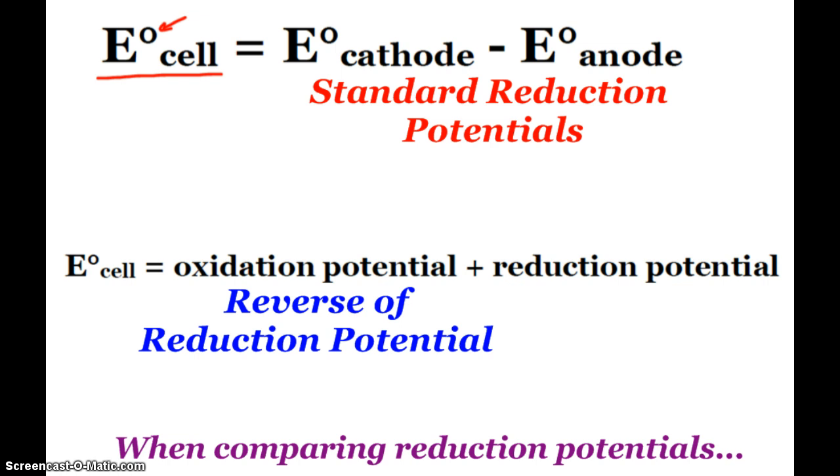If you prefer, some people would rather find the total voltage of the cell by taking the oxidation potential plus the reduction potential. What you'd have to do is look at your standard reduction potentials and flip the sign of whichever reaction is actually the oxidation reaction. I think that just adds another step that could make some confusion, but it's totally up to you.